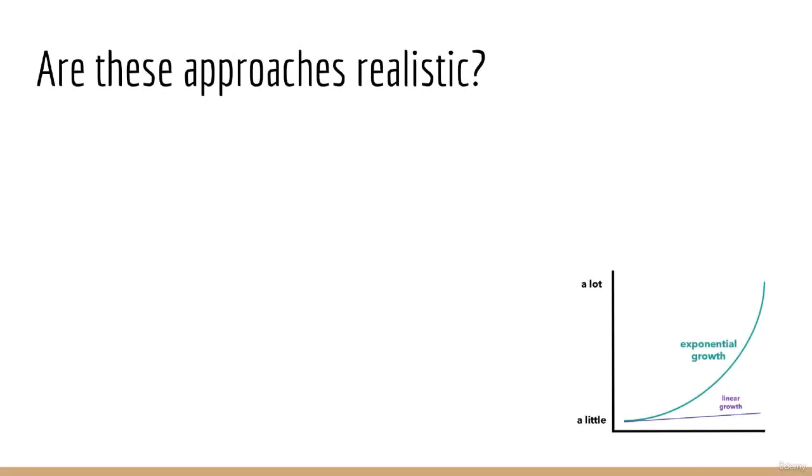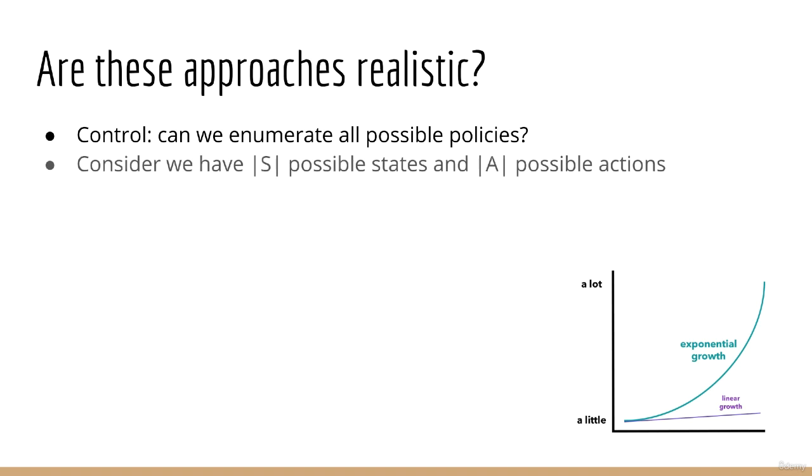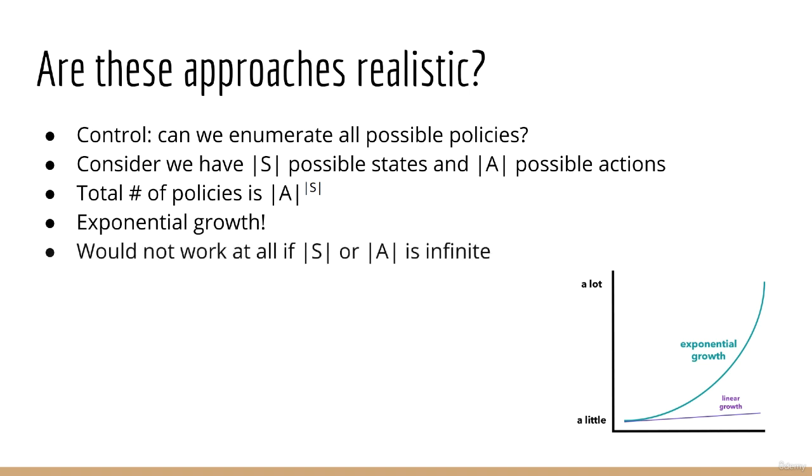Now, let's consider the control problem. Is it really possible to enumerate all possible policies? Consider if we have big S possible states and big A possible actions. In this case, the total number of possible policies is big A to the power big S. In other words, this grows exponentially. And hence, it is not feasible to enumerate all possible policies for most practical problems. Furthermore, this would not even work in the case where the state space or action space is infinitely large.